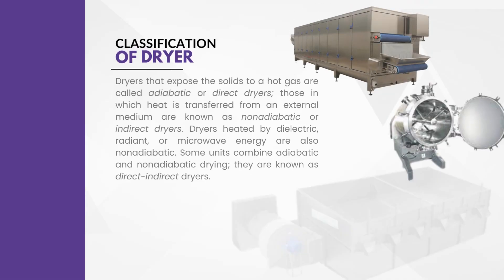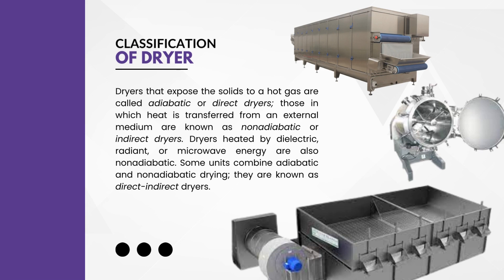Now let's understand the types of dryers with various examples. Imagine you have wet clothes that you want to dry. One method is to use hot air to blow away the moisture from the clothes. This is like using an adiabatic or direct dryer, because hot air is in direct contact with the clothes and transfers heat to them. Another method is to use a metal rod heated by electricity or fire and hang the clothes on the rod to dry them slowly. This is like using a non-adiabatic or indirect dryer, because heat is transferred from the rod to the clothes through conduction, not through direct contact.